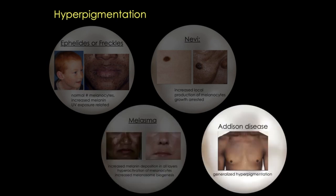You don't just have to have localized hyperpigmentation—you can also see more generalized hyperpigmentation. One example of that would be Addison disease, where there's overproduction of the hormone ACTH, resulting in significant hyperpigmentation.